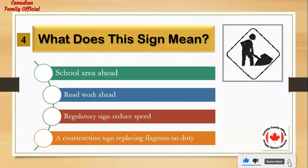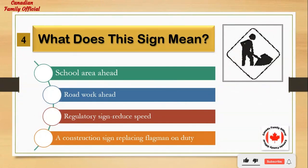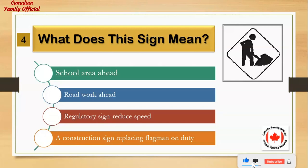What does this sign mean? Number 1: school area ahead. Number 2: road work ahead. Number 3: regulatory sign, reduce speed. Number 4: a construction sign replacing flagman on duty. And the answer is: road work ahead.